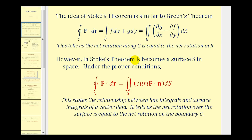However, in Stokes' Theorem the region R becomes the surface S in 3D or in space. And under the proper conditions we have this line integral here equal to the surface integral of the curl of F dotted with N. So Stokes' Theorem states the relationship between line integrals and surface integrals of a vector field given specific conditions, and it tells us the net rotation over the surface is equal to the net rotation on the boundary C given certain conditions.